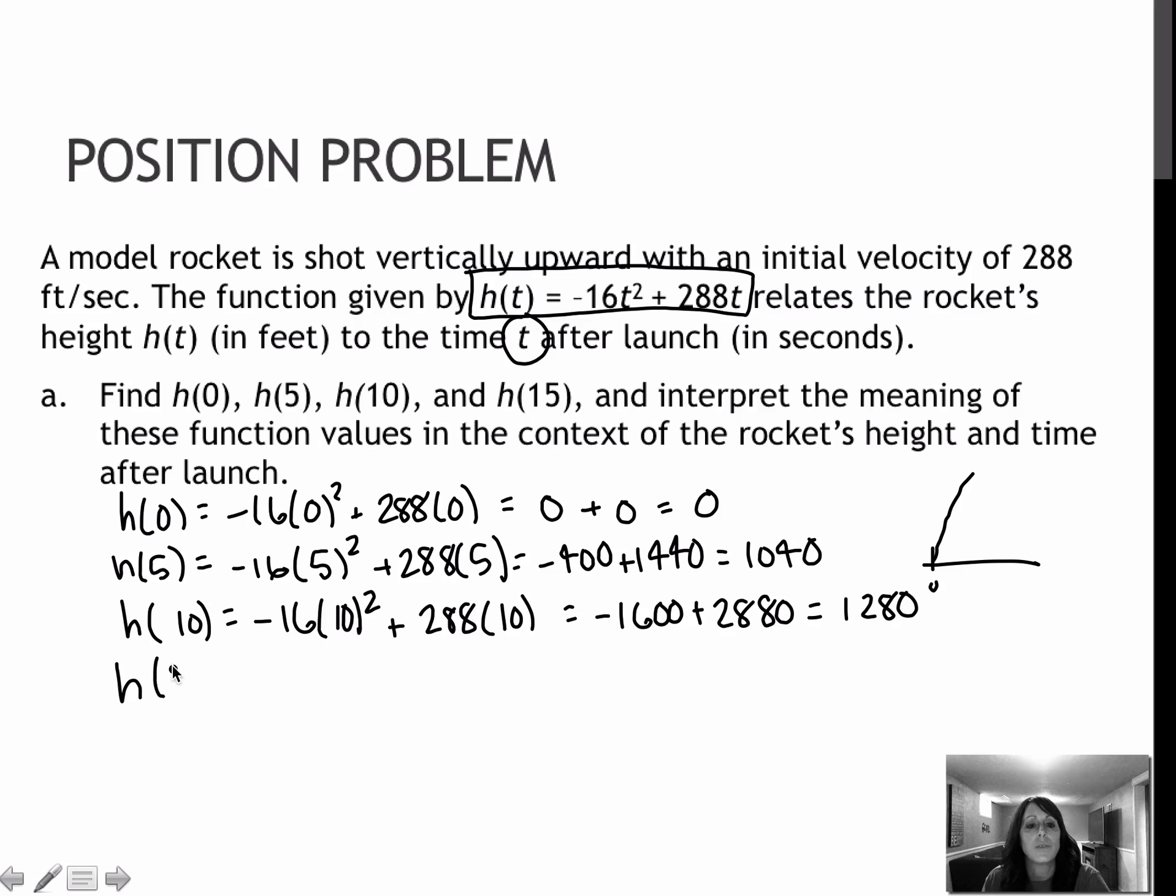When I get to h(15), negative 16 times 15 squared plus 288 times 15, that gave me negative 3600 plus 4320, which was 720. So we can see sometime between 10 and 15 seconds, the rocket starts to come back down. And this makes sense because it's a quadratic and a quadratic would be a parabola. At 15 seconds, the height of the rocket is 720 feet, which means it started to come back down to earth.